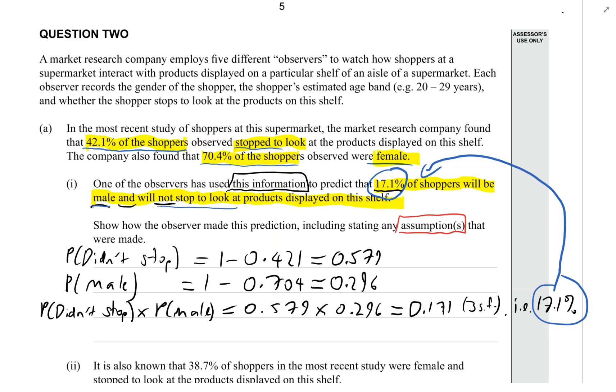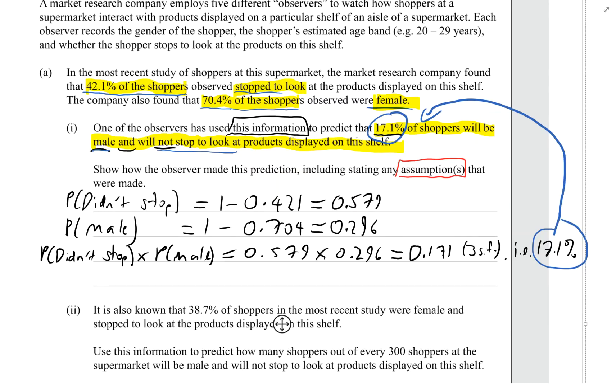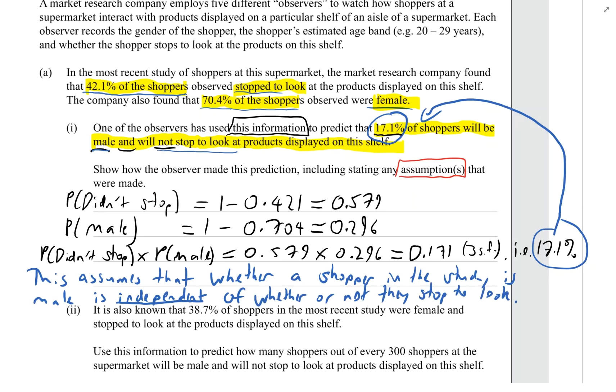Is that a reasonable assumption? Well there may be a gender difference. It may be that either males or females are more likely to stop and look, which means we should regard it with caution. This assumes that whether a shopper in the study is male is independent of whether or not they stopped to look at the products. And I would say that this is a very questionable assumption without evidence to support it.